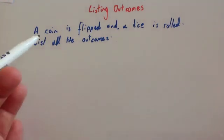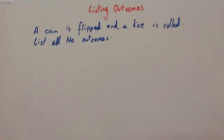So here's an example. A coin is flipped and a dice is rolled. List all the outcomes, all the possible outcomes.